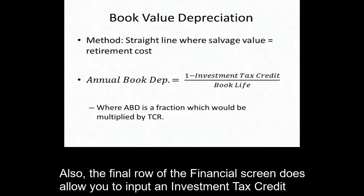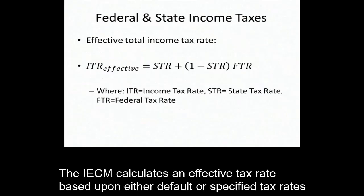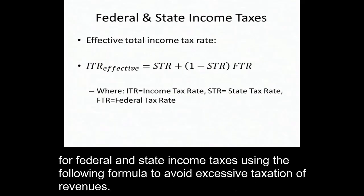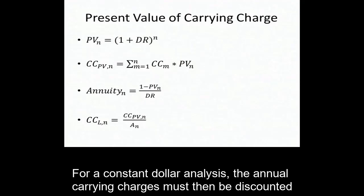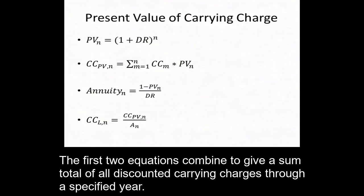The final row of the financing screen does allow you to input an investment tax credit if you are curious to observe what the impact of such a policy would be on plant finances. The IECM calculates an effective tax rate based upon either default or specified tax rates for federal and state income taxes using the following formula to avoid excessive taxation of revenues. For a constant dollar analysis, the annual carrying charges must then be discounted according to our calculated discount rate for the financial book life of our project. The first two equations combine to give a sum total of all discounted carrying charges through a specified year.